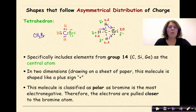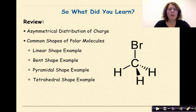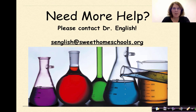This specifically includes Group 14 elements — carbon, silicon, and germanium — as the central atom. In two dimensions on paper, this molecule is shaped like a plus sign. It is classified as polar because bromine is the most electronegative element, so electrons are pulled closer to the bromine atom. To summarize: we talked about asymmetrical distribution of charge in a molecule and the common shapes of polar molecules — linear, bent, pyramidal, and tetrahedral. Feel free to contact me if you need more help. Have a great day.